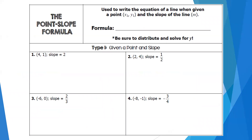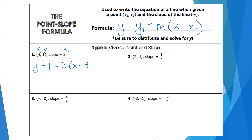Another way you might see a line equation is in point-slope form. The point-slope formula says y minus y1 equals m times x minus x1. It's used to write an equation given a point and a slope. Here I have the point (4, 1) — that's my x1 and y1 — and slope m equals 2. So the equation is y minus 1 equals 2 times x minus 4.